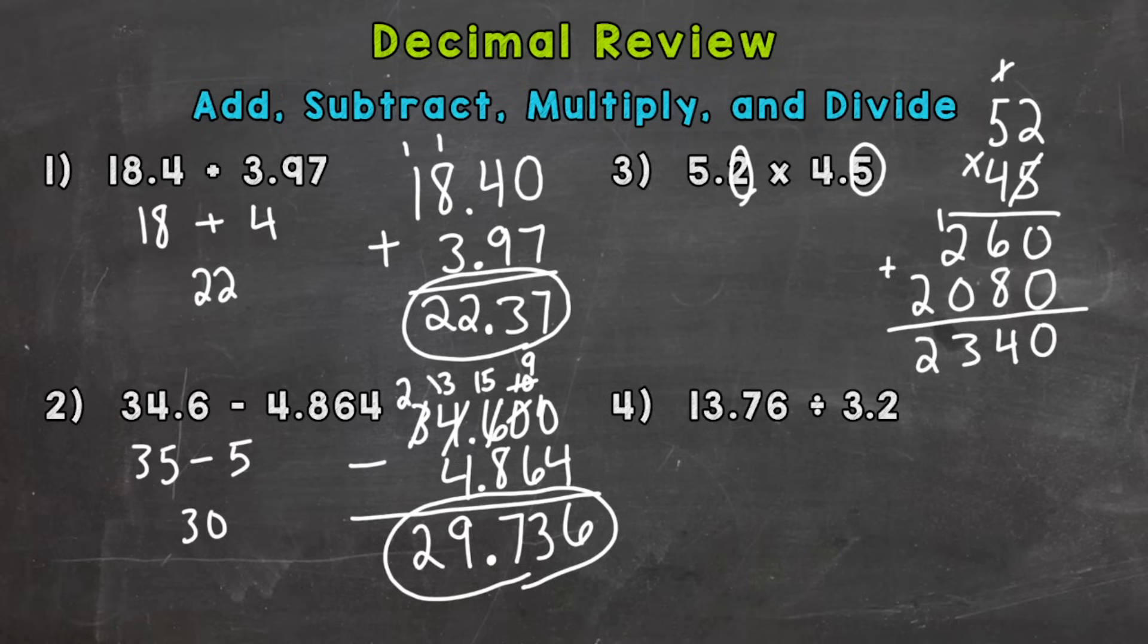So our answer needs 2 digits behind the decimal. So we bring it in 1, 2. And it goes right here. Or think of it as 1, 2 digits behind the decimal in our answer. So for number 3, the product is 23.40. And if we take a look at our original problem, we have something around 5 times something around 5. So our answer should be somewhere around 25. So our answer is reasonable. We know we put the decimal in the correct place.